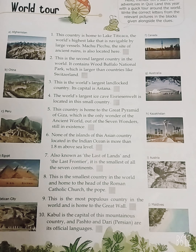First: this country is home to Lake Titicaca, the world's highest lake that is navigable by large vessels. Machu Picchu, the site of ancient ruins, is also located here. Any guess? Yeh desh duniya ki sabse unchi jheel, Titicaca jheel, aur purani khandar ka sthal Machu Picchu bhi yehi sthit hai. Your answer is C — Peru.